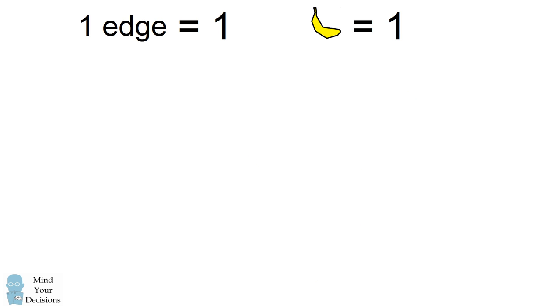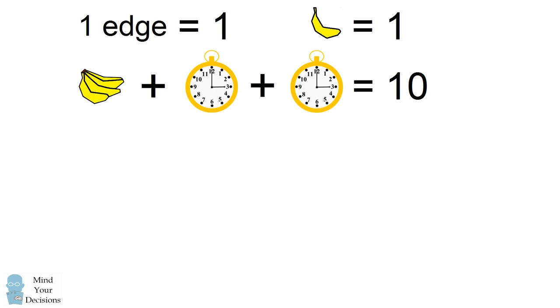We'll take this information and use it to solve the next equation. We have a bunch of four bananas which we know will be equal to 4. We're adding that to two clocks which show 3 o'clock. And that's going to be equal to 10.